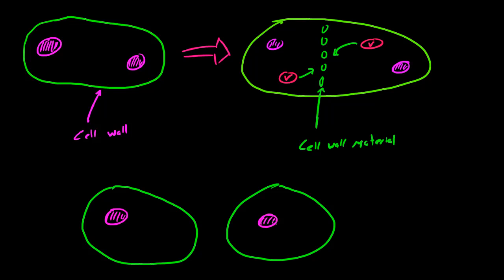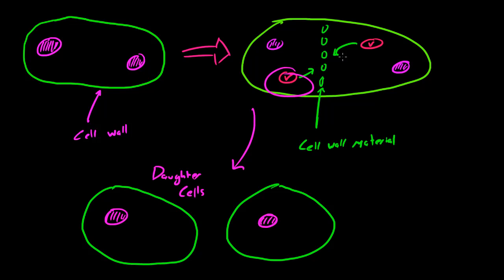As you can see, the process of cytokinesis in plant cells and animal cells is a little bit different. Mostly because instead of proteins that squeeze the original cell together, we now have vesicles that come in and dump new cell wall material, splitting the original cell into two daughter cells. The reason we need the vesicles to deposit the new cell wall material is because the cell wall is so rigid we just can't squeeze it together like animal cells.